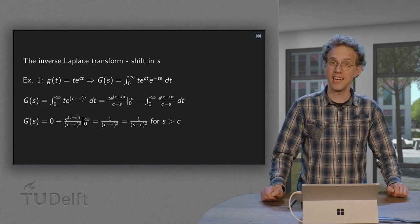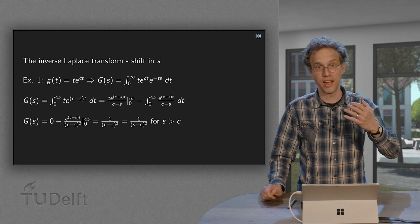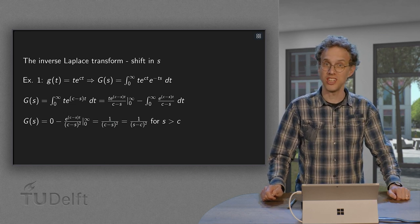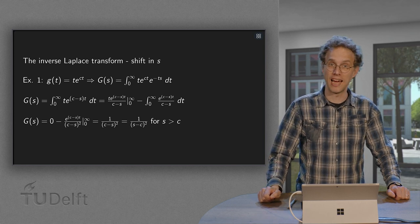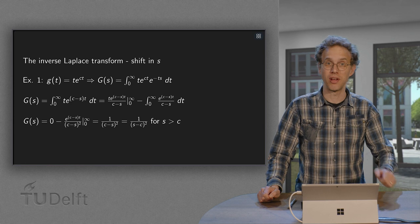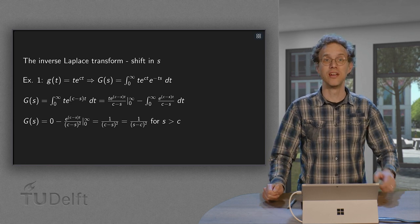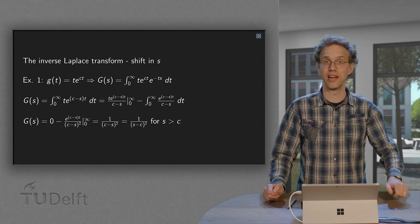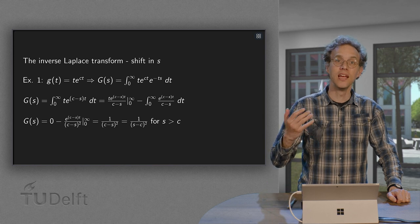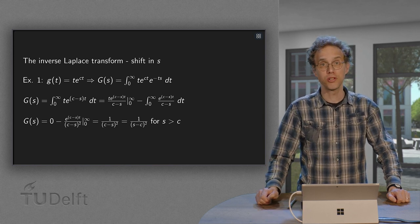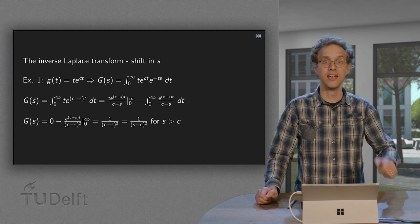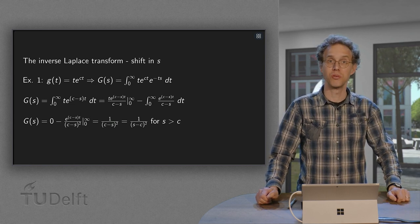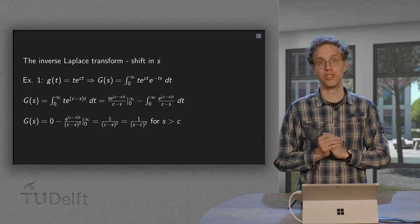But if it is in the table when we shift s over a constant c, so if we can write our G(s) as F(s-c), where F is in our table, then we can also use our table to transform our G(s) back. This method allows us to transform back a whole new class of functions.